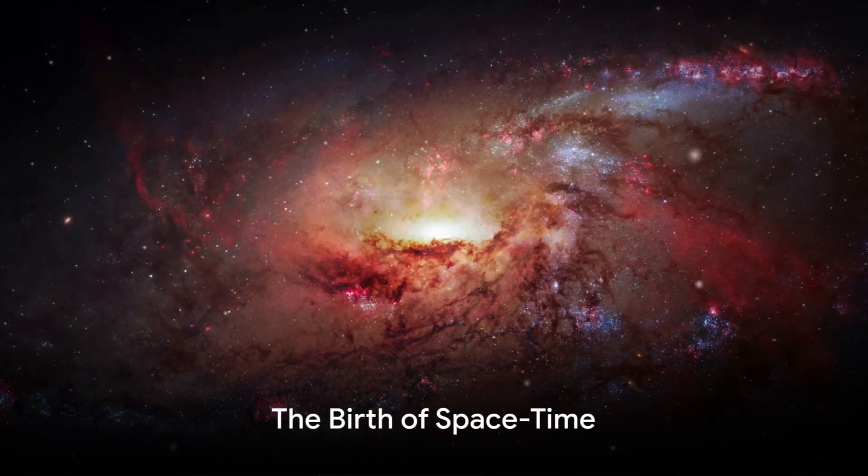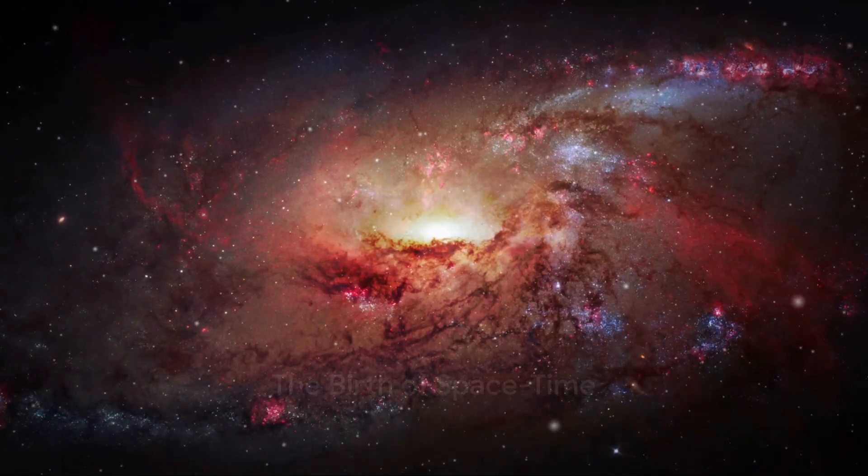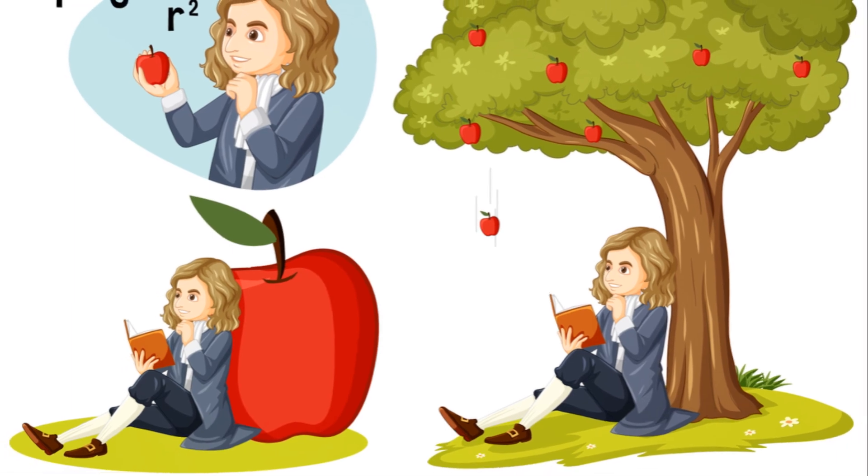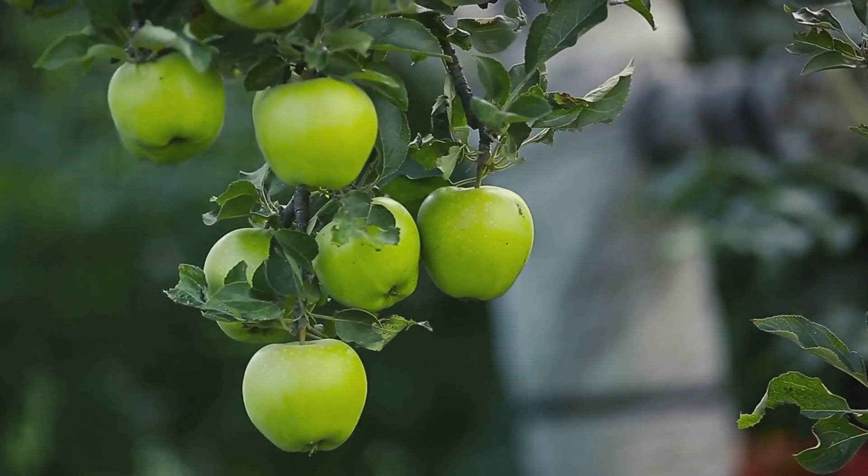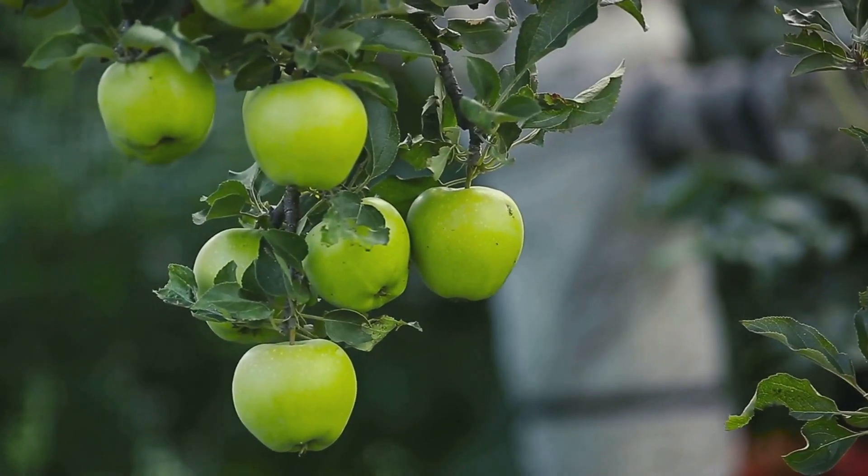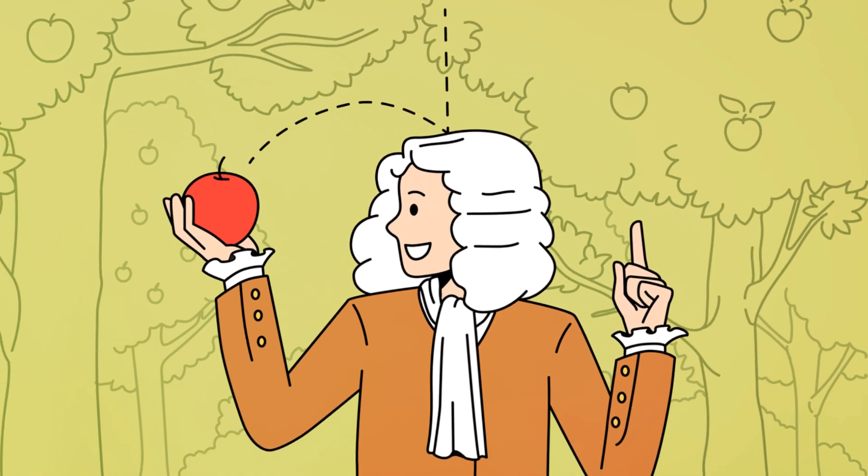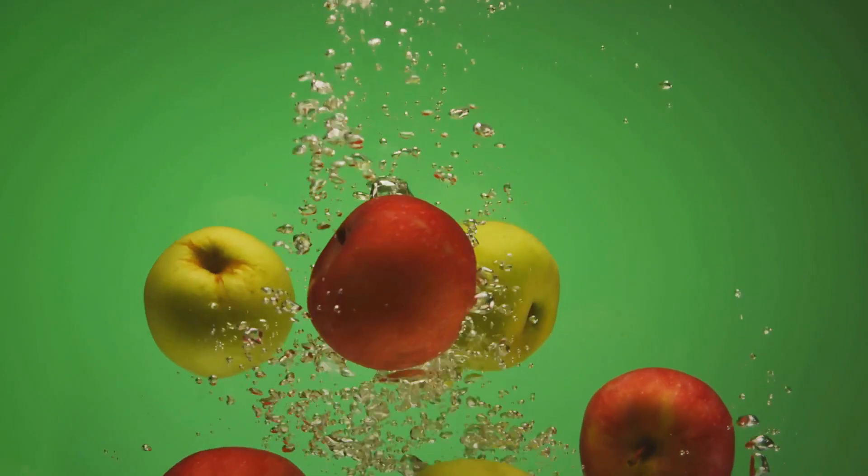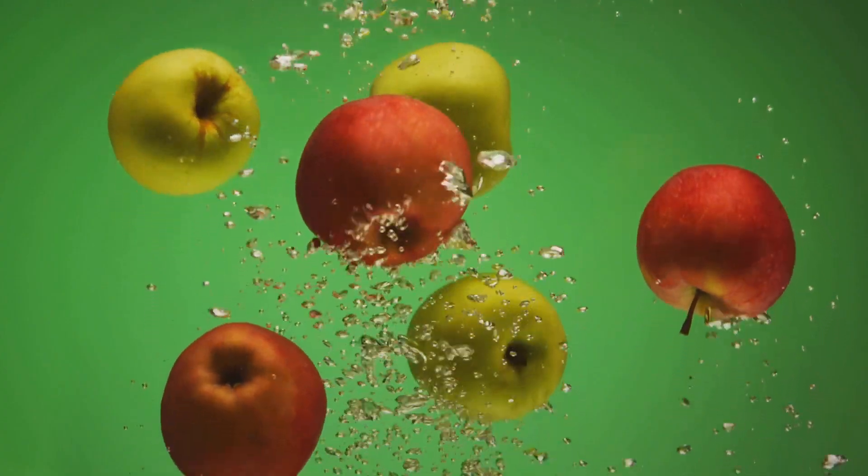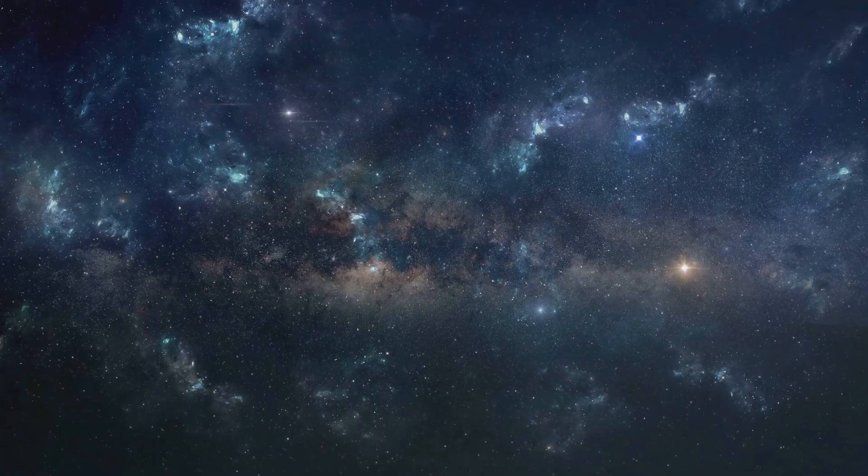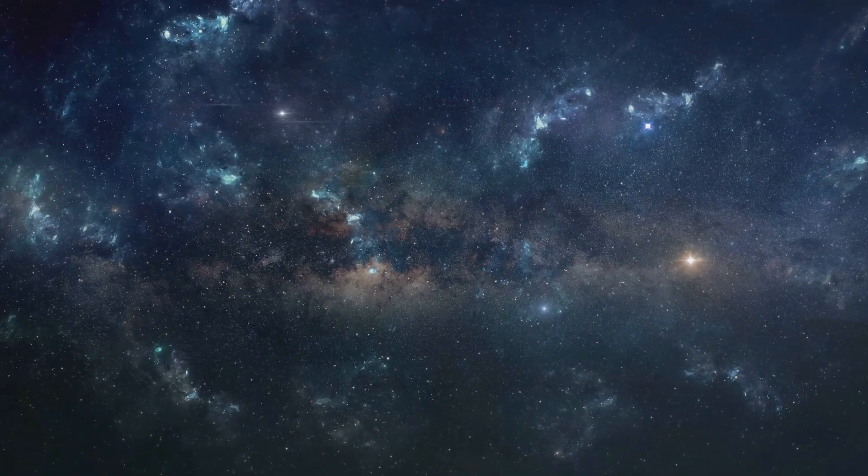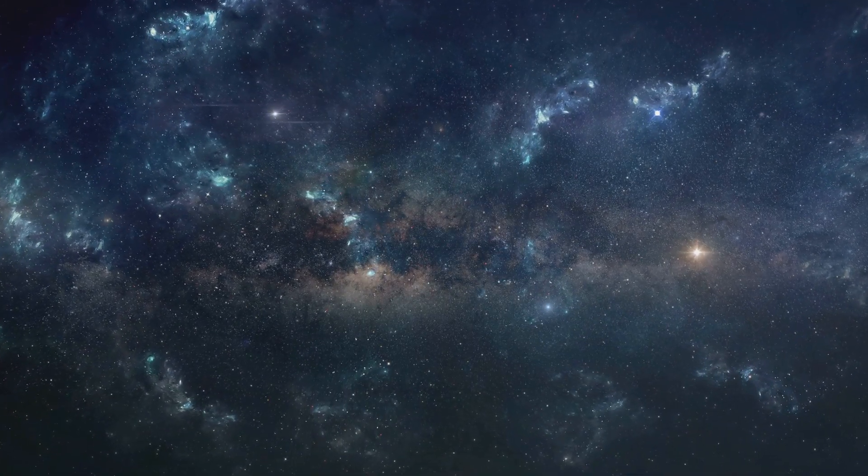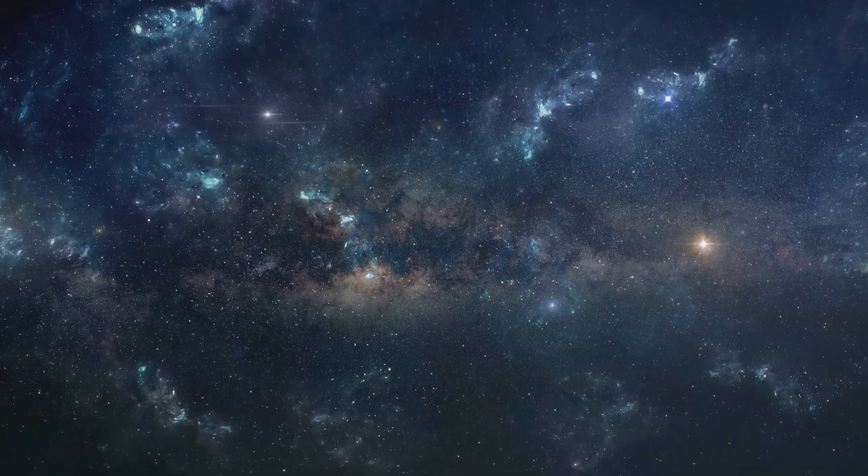Our understanding of the space-time continuum began with a man and an apple. This man was Sir Isaac Newton, a 17th-century physicist, mathematician, and philosopher. While sitting under an apple tree, an apple fell, sparking Newton's curiosity about why it fell straight down and not sideways or upwards. This curiosity led to the formulation of his laws of motion and universal gravitation. These laws depicted space as a stage where events occur over time.